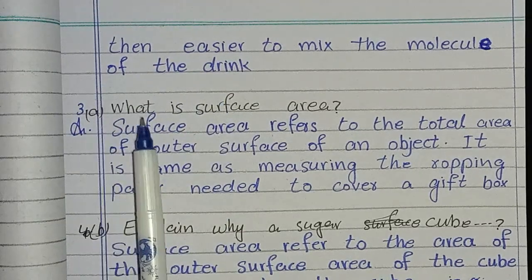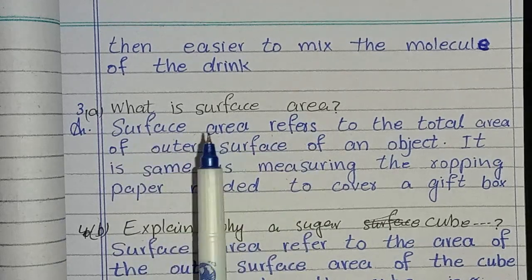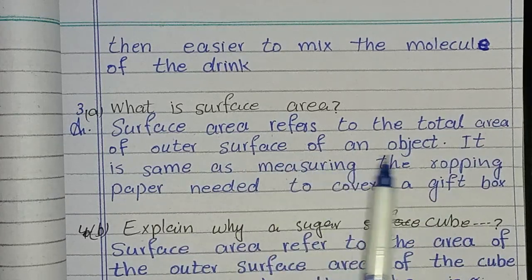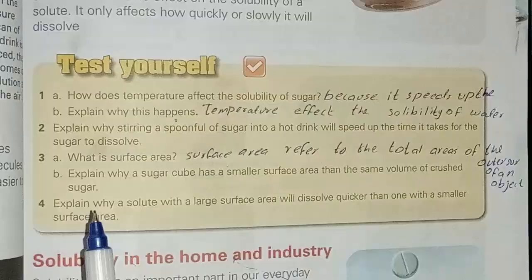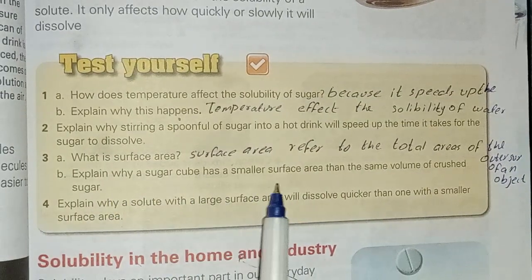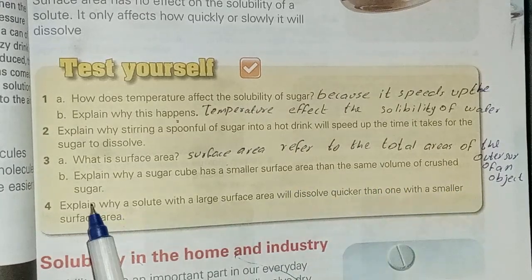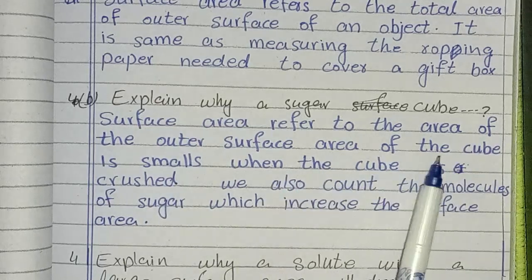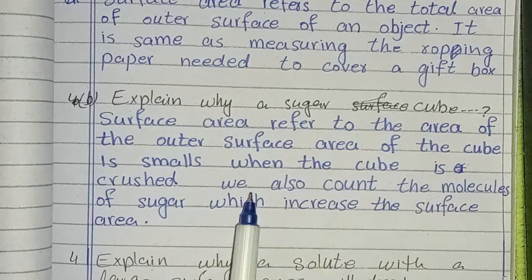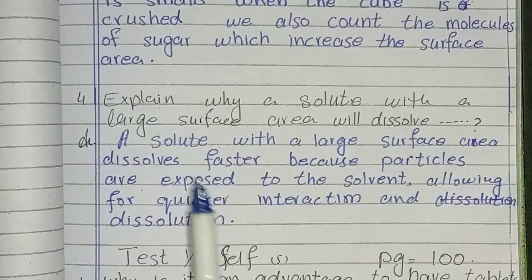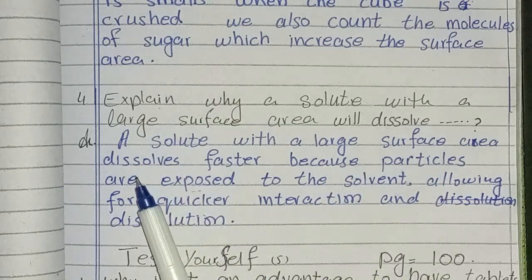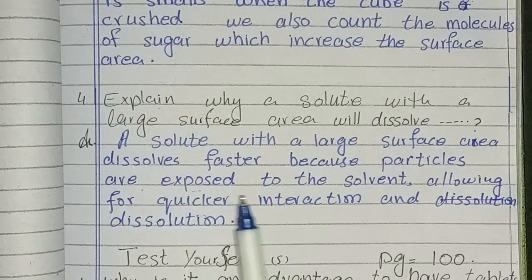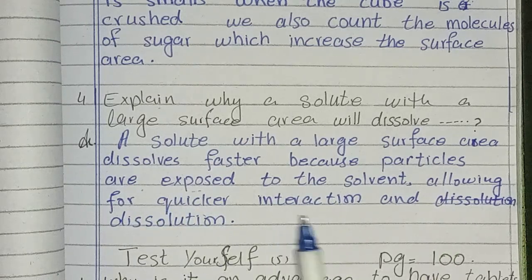Third question, part A: what is surface area? Surface area refers to the total area of the outer surface of an object — it is like measuring the wrapping paper needed to cover a gift box. Part B: explain why a sugar cube has a smaller surface area than the same volume of crushed sugar. When the cube is crushed, we also expose the inner molecules of sugar, which increases the surface area. Last question: explain why a solute with a large surface area will dissolve quicker than one with a smaller surface area. A solute with a large surface area dissolves faster because more particles are exposed to the solvent, allowing for quicker interaction and dissolution.